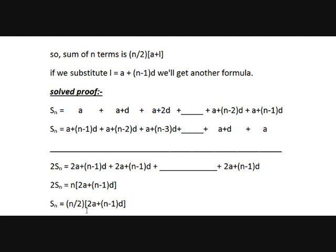As discussed above, if we write 2a as a plus a, it becomes a plus a plus n minus 1 times d, which is nothing but a plus l. So Sn equals n by 2 into a plus l.